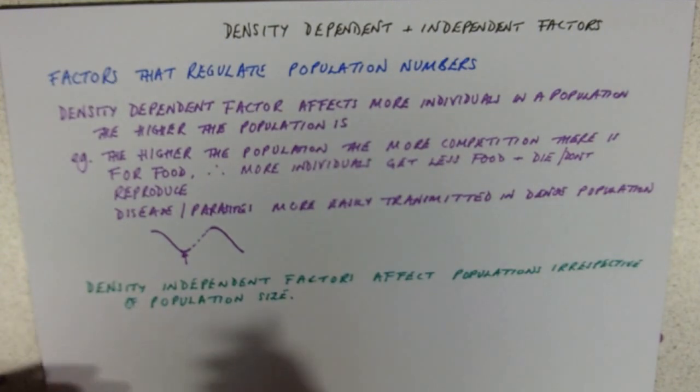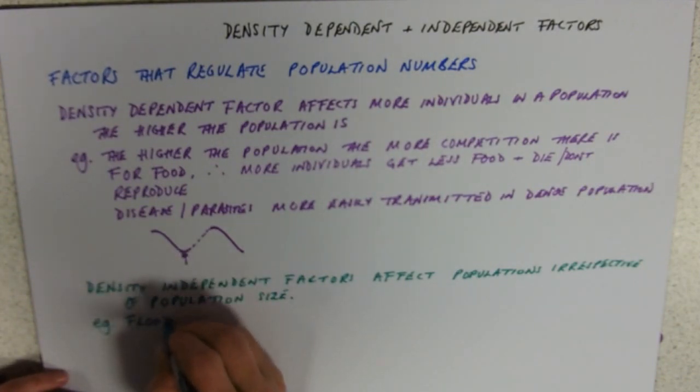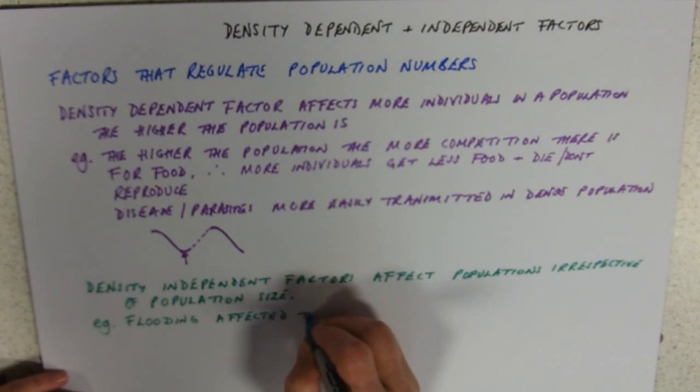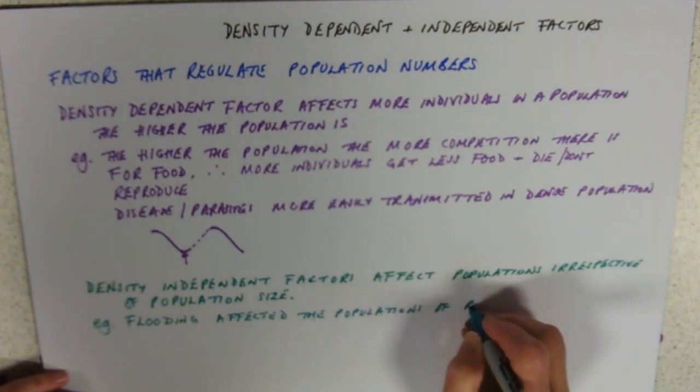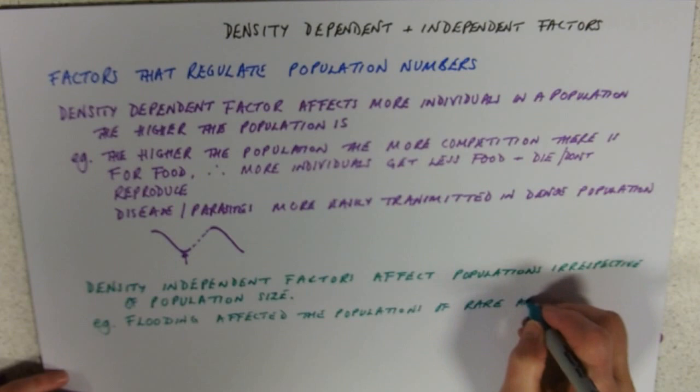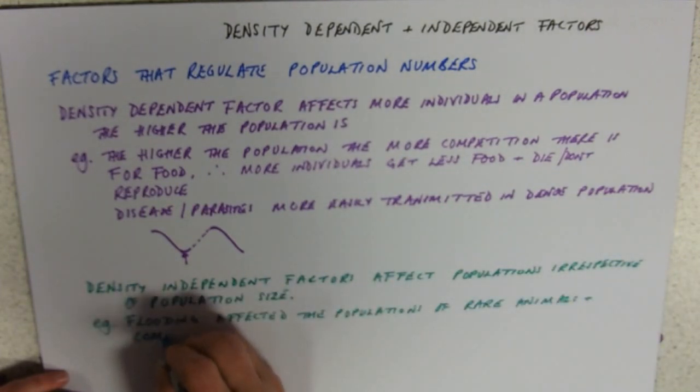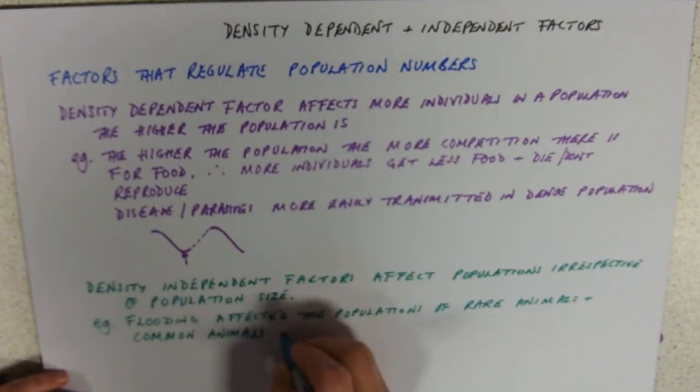So if you think back a couple of years ago to the floods, flooding affected populations of rare animals where there's not many of them and common animals where the population is really high equally.